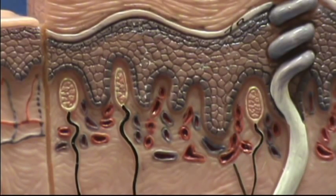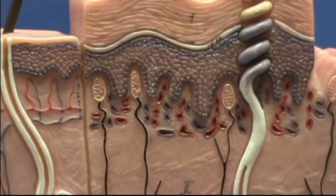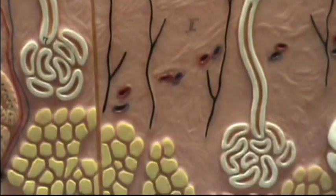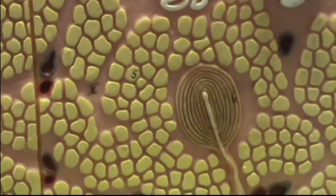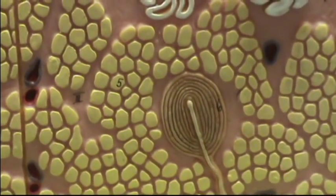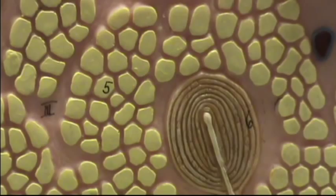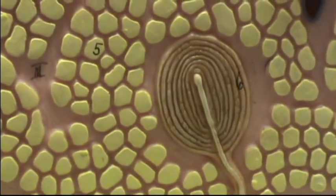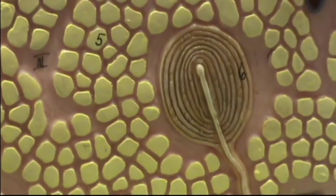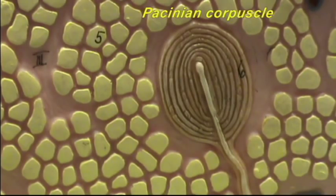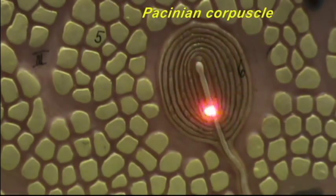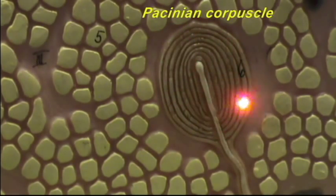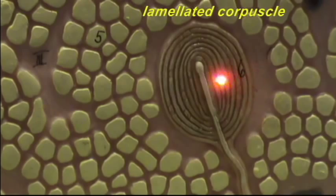Now if you go down deeper into the subcutaneous layer, we can then see the other sensory structure, which is fairly obvious here. This is the Pacinian corpuscle, and you can see it has this layered appearance — hence it's also known as the lamellated corpuscle.